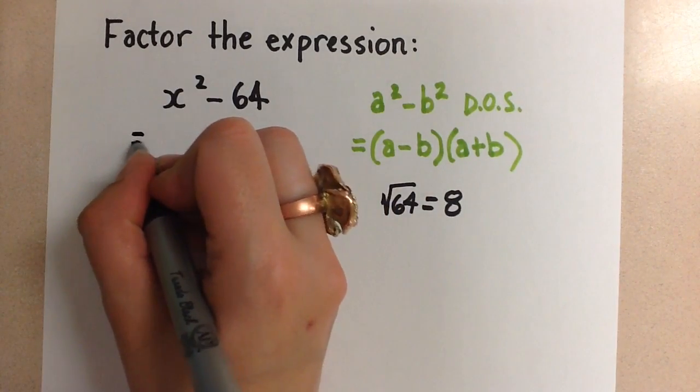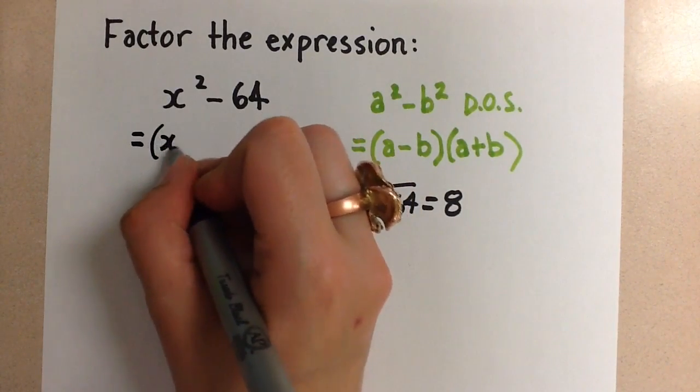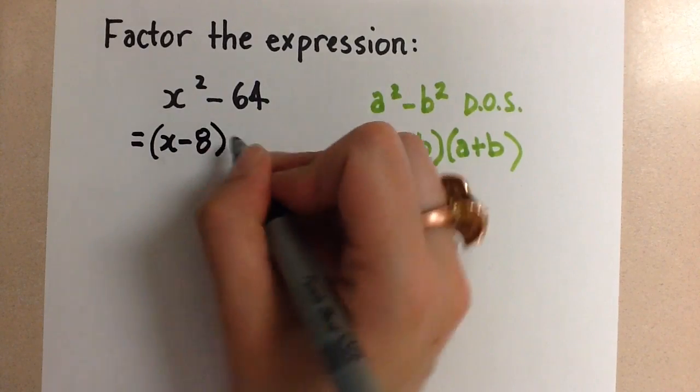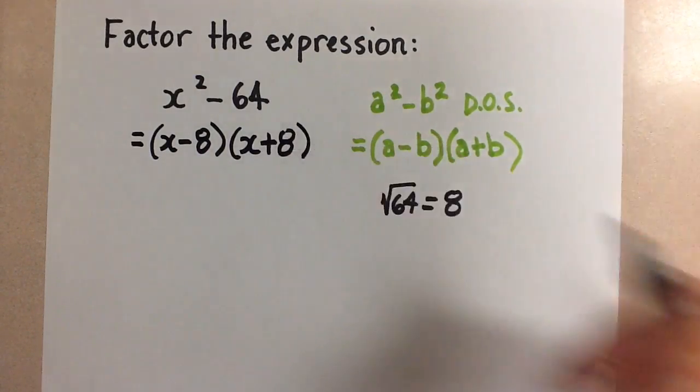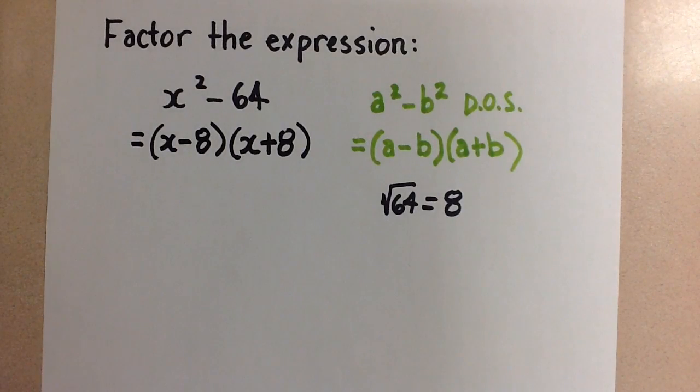and when we factor it, it will be x minus 8 and x plus 8. And that is how you factor a difference of squares.